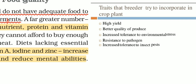Number three is increased tolerance to environmental stress. We have studied many stresses in previous videos. It can be drought, it can be floods, salinity, high exposure to light, high exposure to temperature — it can be high or low.